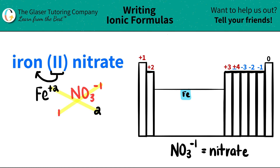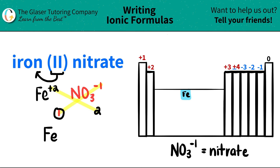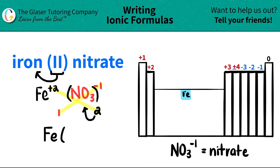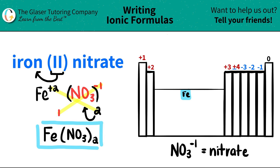And now you're ready to write the formula. For the iron, you only need one of them, so you don't have to write the 1. But here's the thing: if you have multiple of your polyatomic, you need to put that polyatomic in parentheses. So parentheses come first, and then you state that you have two of them. That is your final answer — iron 2 nitrate is Fe(NO₃)₂.